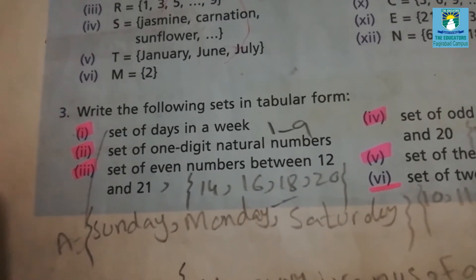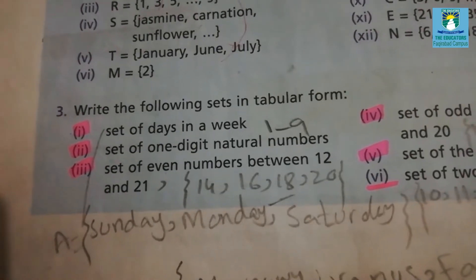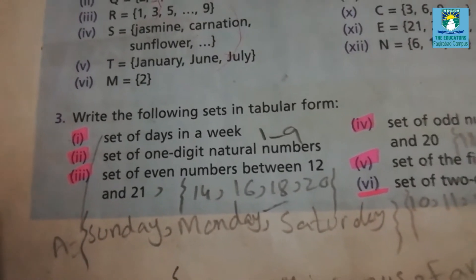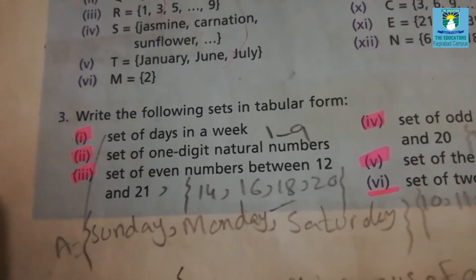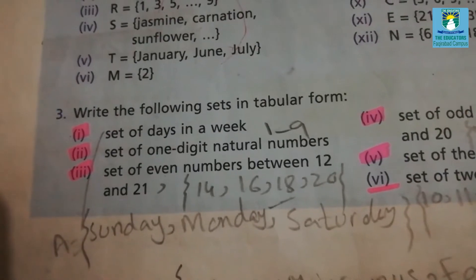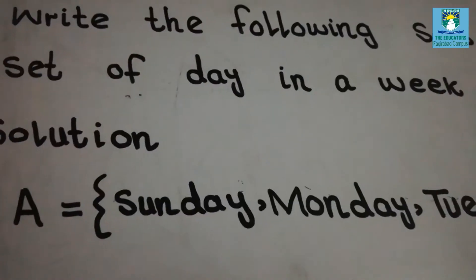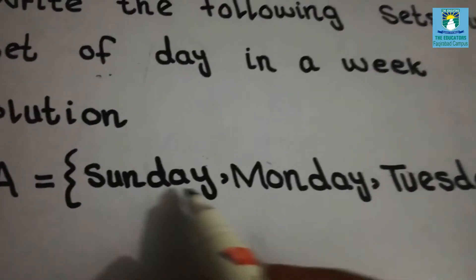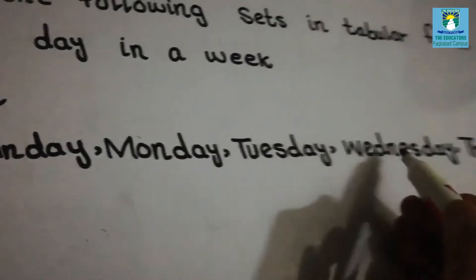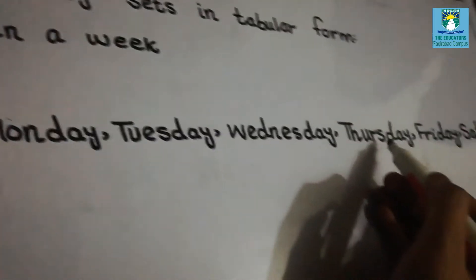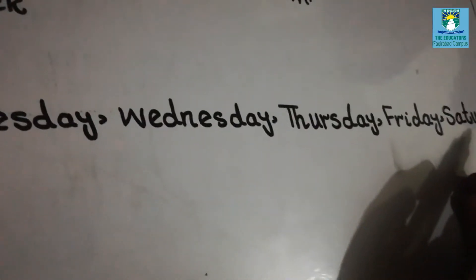The first one is set of days in a week. First tell me how many days we have in a week. We have 7 days in a week. So we will write here Sunday, Monday, Tuesday, Wednesday, Thursday, Friday and Saturday.